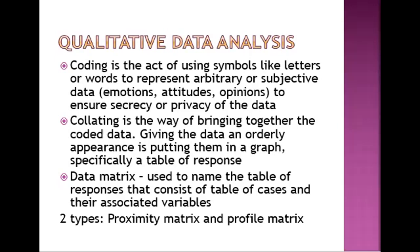That's where your data or information is placed. The data matrix has two types. The profile matrix and proximity matrix that indicates the measurement of similarities and differences between the items. Under the proximity matrix, if the measurement shows how things are alike, when everything is the same, when they have similarities, it's also called similarity matrix.